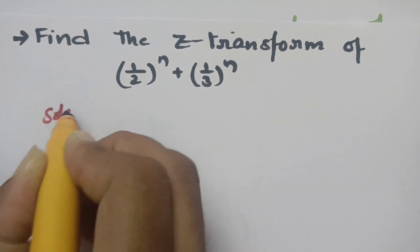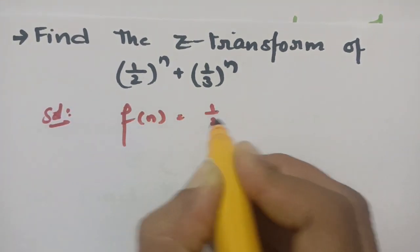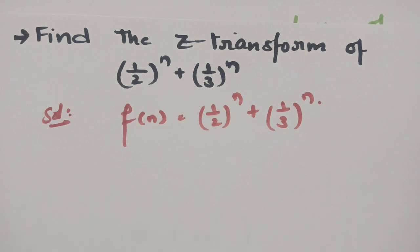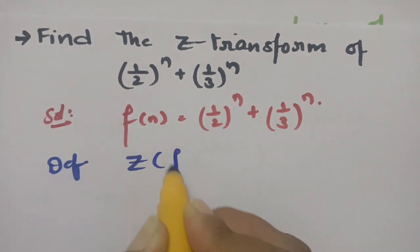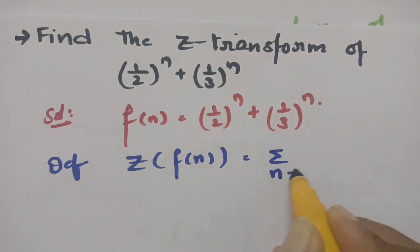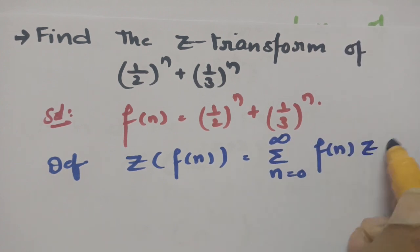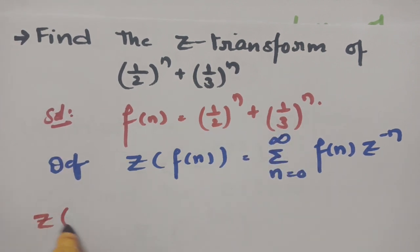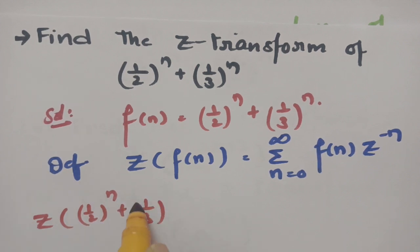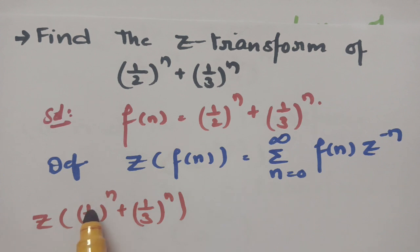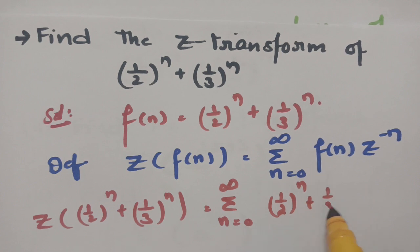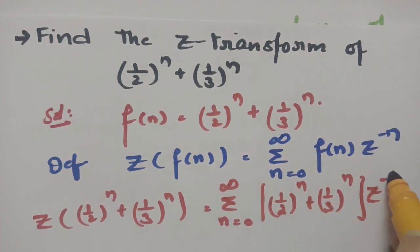For the first question, find the Z transform of (1/2)^n + (1/3)^n. We consider f(n) = (1/2)^n + (1/3)^n. According to the definition, Z{f(n)} = σ (n=0 to ∞) f(n) · z^(−n), so we write: σ (n=0 to ∞) [(1/2)^n + (1/3)^n] · z^(−n).